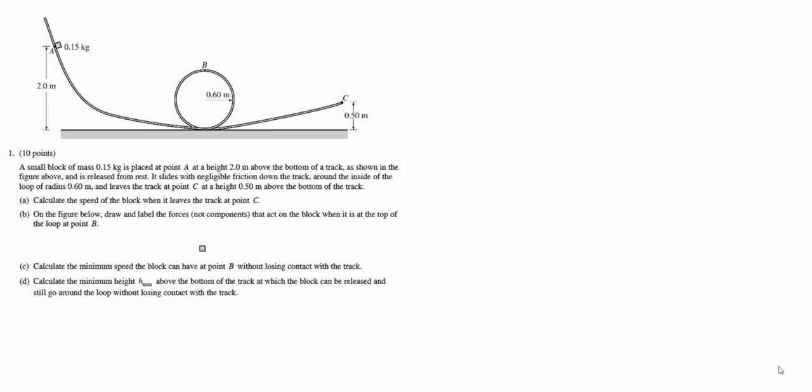Okay, this is number one from the 2010 Form B AP Physics exam. This is primarily a mechanics problem dealing with energy and circular motion. We've got ourselves a roller coaster. We've got a block up here, it's going around a loop, ejecting off the edge at point C. We've got some geometry given here. We want to know the speed of the block when it leaves at point C.